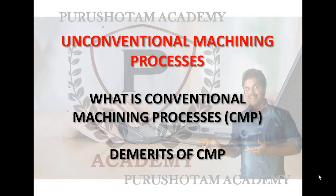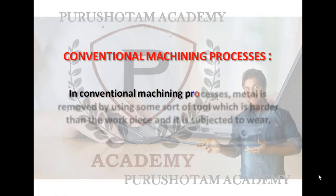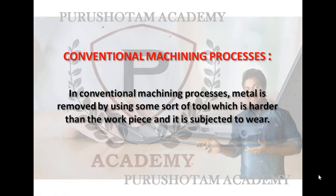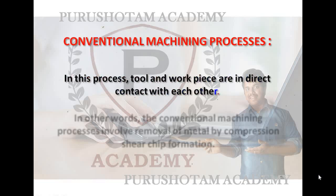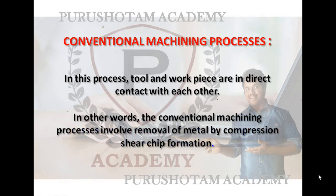So, what is the conventional machining process, CMP, and what are the demerits of CMP? In conventional machining processes, metal is removed by using some sort of tool which is harder than the workpiece, and the tool is subject to wear. The tool and workpiece are in direct contact with each other. In other words, conventional machining processes involve removal of metal by compression, shear, and chip formation.